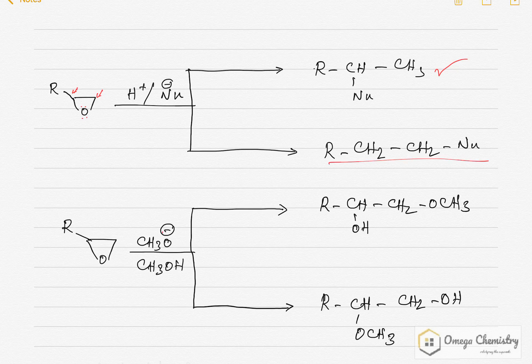Likewise, in base catalyzed reactions, if the methoxide ion attacks here, then I will get this product. Whereas if it attacks this carbon, I will get this product. Now to understand this, let us see the mechanism of ring opening in acid catalyzed reactions.